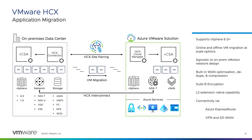The HCX Cloud Manager can be automatically deployed and configured via the Add-ons tab in the Azure portal once your AVS private cloud is deployed. Afterwards, you simply need to download, activate, and configure the HCX connector in your on-premises VMware environment.